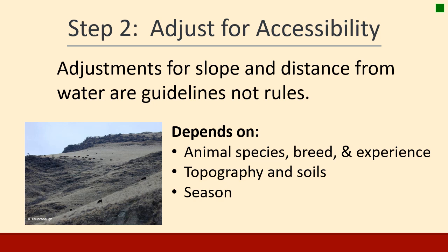These guidelines are not rules — they depend a lot on the species, breed, and experience. For example, cows near Riggins grew up using really steep country and distribute relatively well there, while plains cows wouldn't know what to do with it. Topography, soils, and season of grazing also affect accessibility. In spring, forage has so much water that animals can travel much farther from a water source than later in the season when it's hotter and drier. It's really important to look at your specific pasture and decide what factors influence the accessibility of forage.